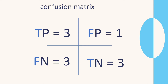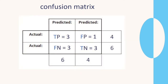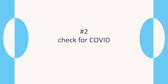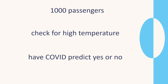As we said, the confusion matrix can have different formats — it's a prediction compared to actual results. Let's look at another example. Here we're going to check for COVID. There are 1000 passengers and we're going to check their temperature to see if it's too high. We'll predict that if a passenger has a high temperature, they have COVID. So a prediction is either yes — positive, they have COVID — or no — negative, they do not have COVID.